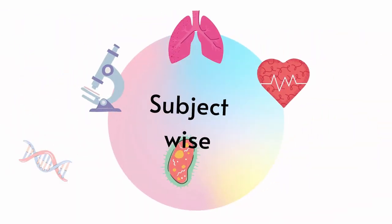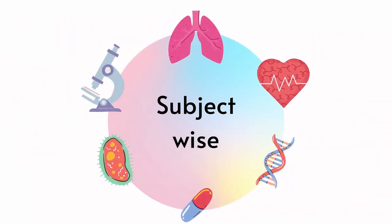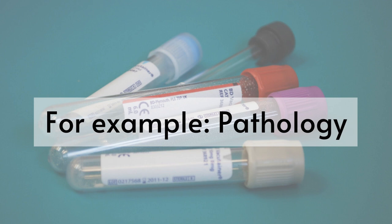The second way is subject-wise, where you know which subject you want to work in. It was the case with me — I wanted to work in pathology. A subject-wise guide may have many research papers in that subject and will highlight the gray areas still to be researched.